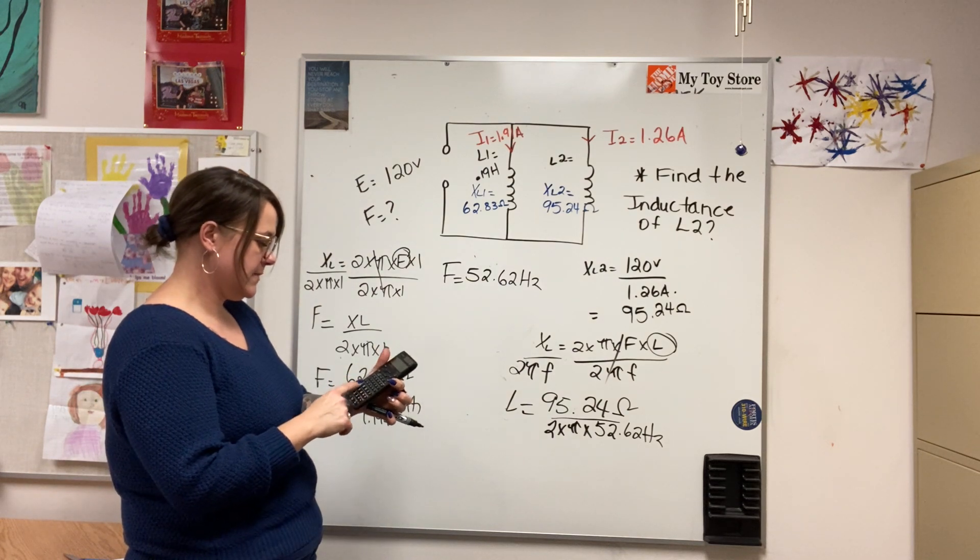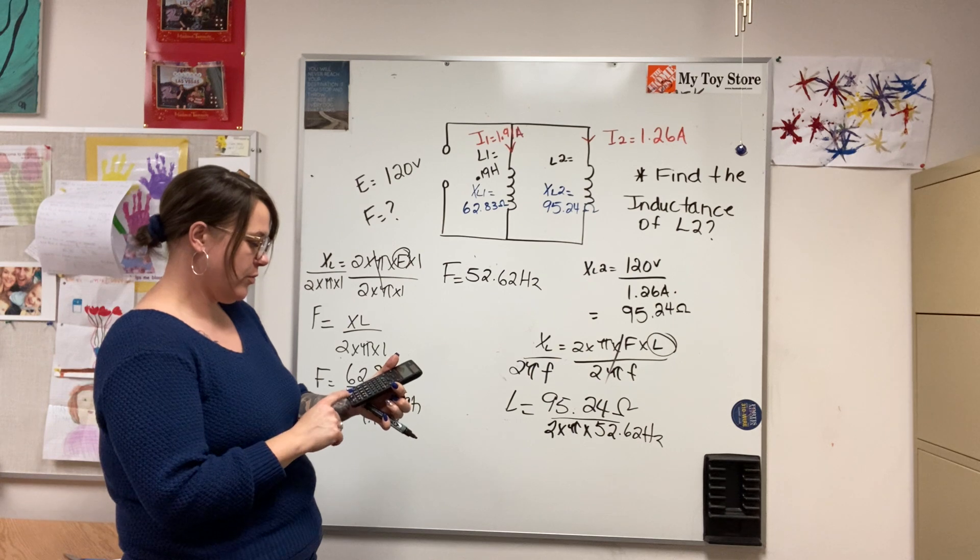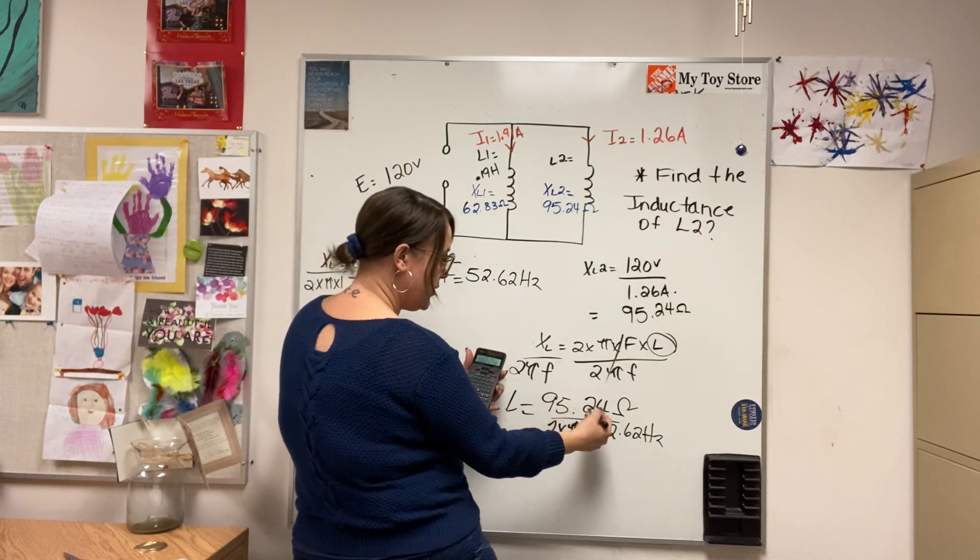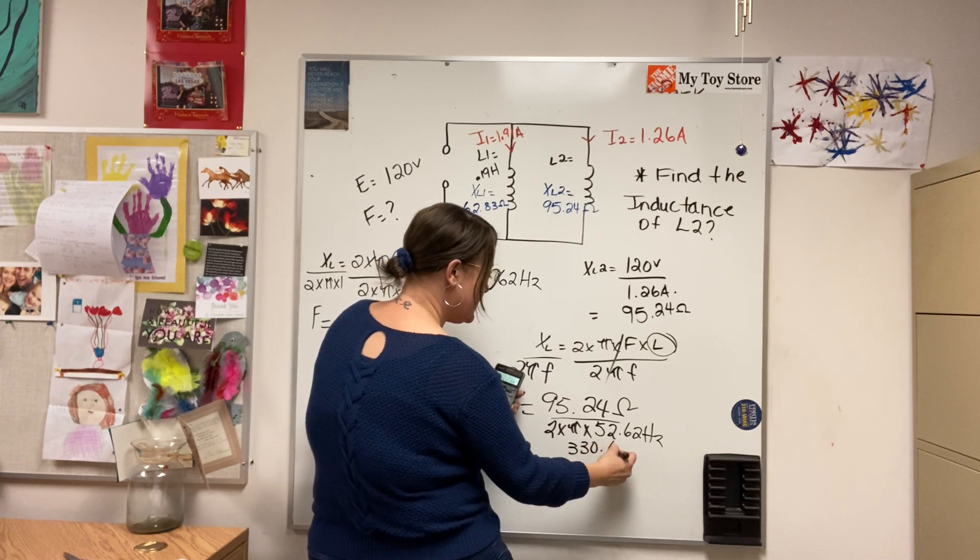So 2 times pi times 52.62 equals, so 95.24 divided by 330.62.